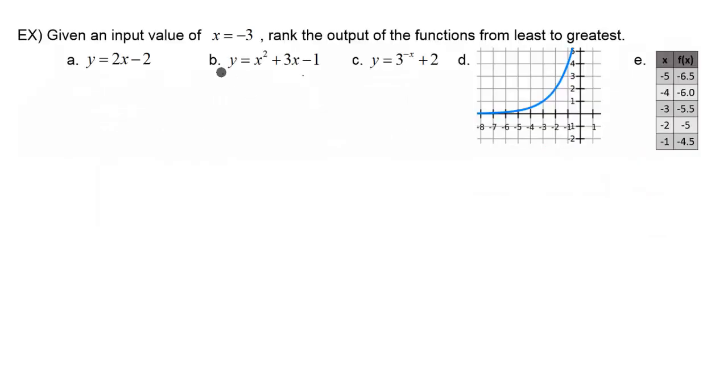In this question, we're dealing with inputs and outputs. Inputs, when you're given a function, is usually dealing with the x value, and an output is usually dealing with the y value. Our goal here is to use the x value right here, negative 3, as our input, figure out all the outputs here, which would be the y values, and then just rank them from least to greatest.